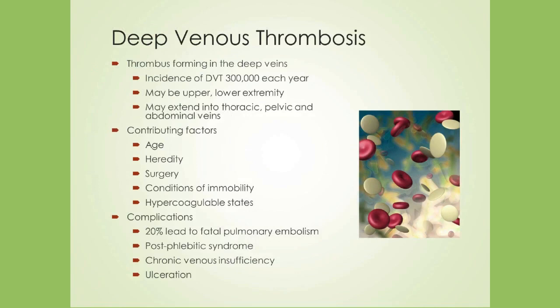Deep venous thrombosis, or DVT, is defined as thrombus formation in any deep vein. This may occur in the upper or lower extremities and may extend into the veins of the thorax, abdomen, and pelvis. Multiple factors contribute to the development of DVT, including age, heredity, surgery, any condition leading to prolonged immobility, congenital and acquired hypercoagulable states, and hormone therapy. Once the diagnosis has been made, the goal of therapy is to prevent complications such as pulmonary embolism, post-phlebitic syndrome, chronic venous insufficiency, and ulceration.